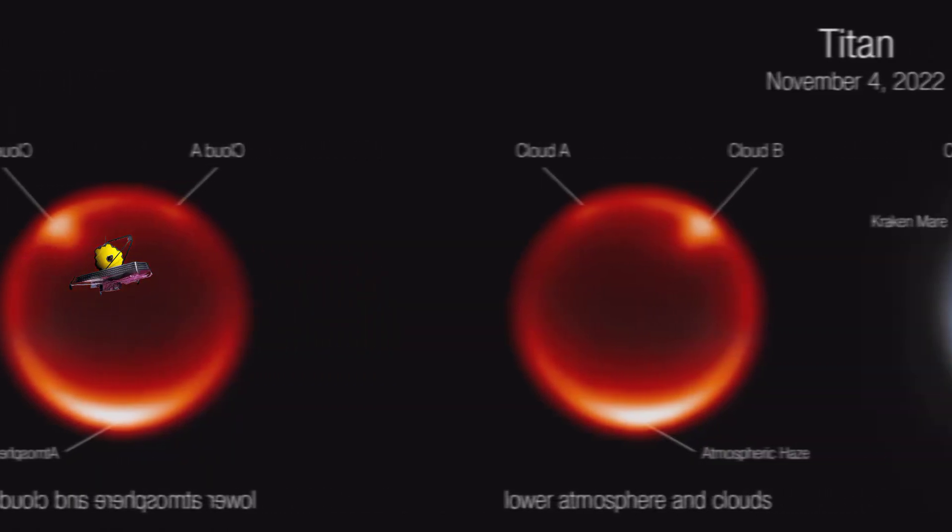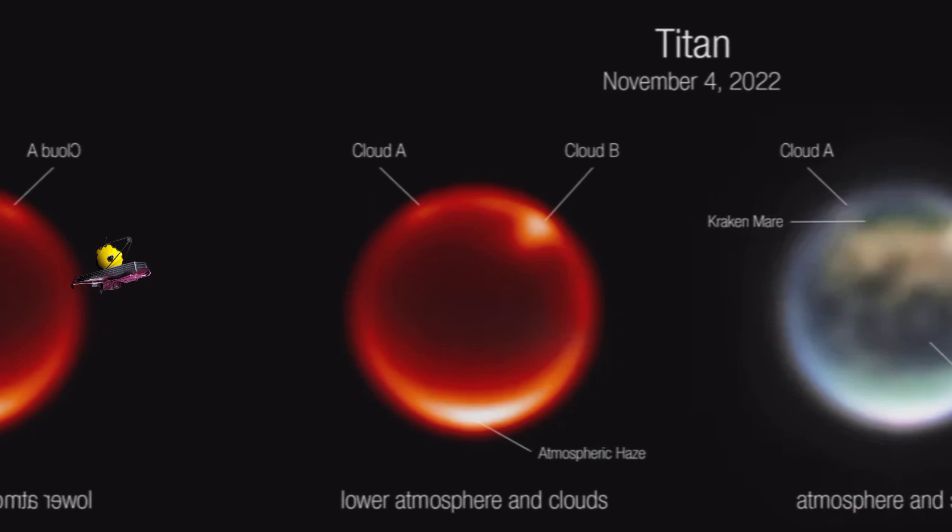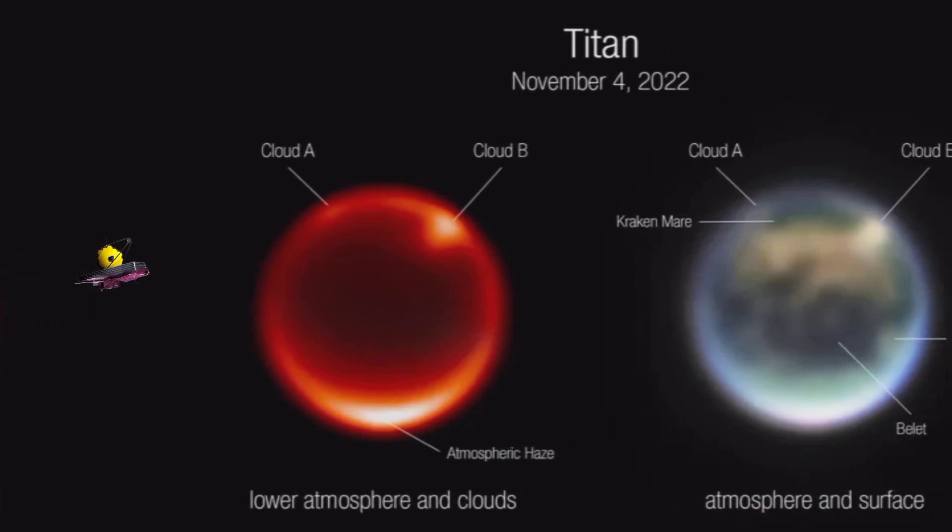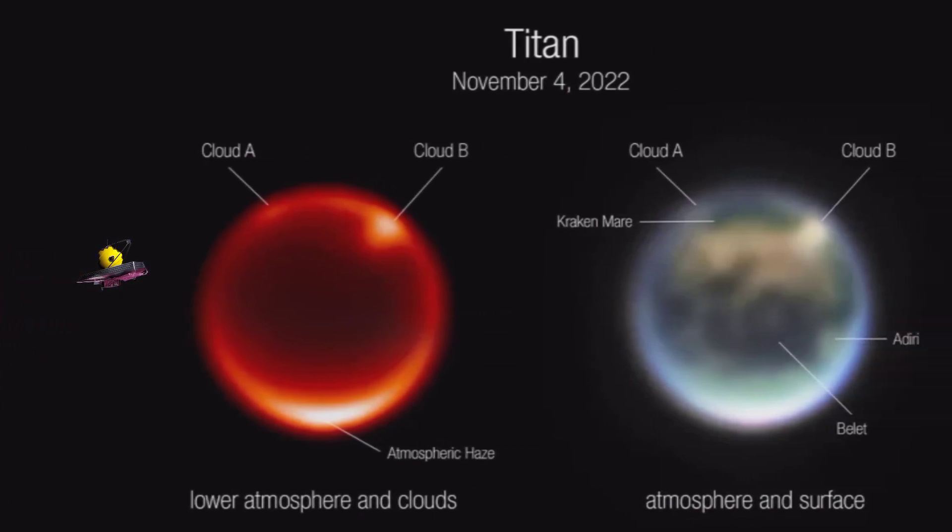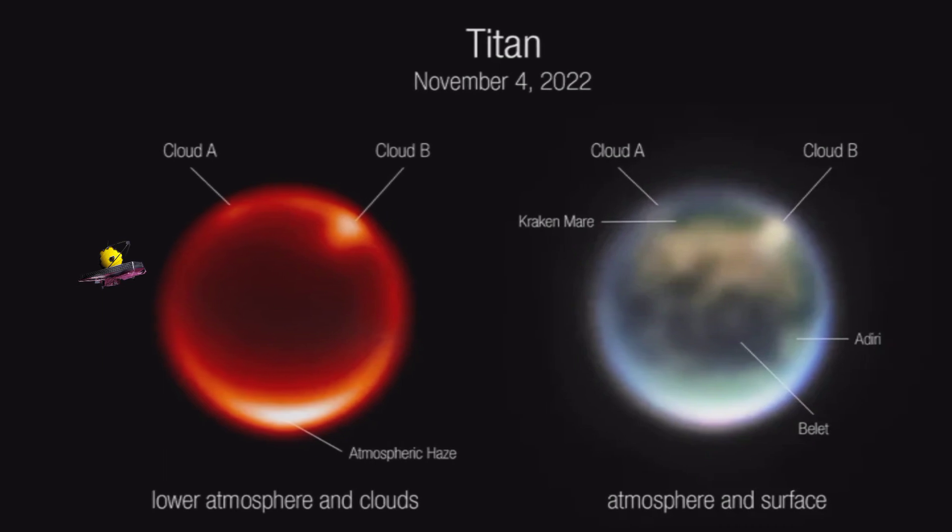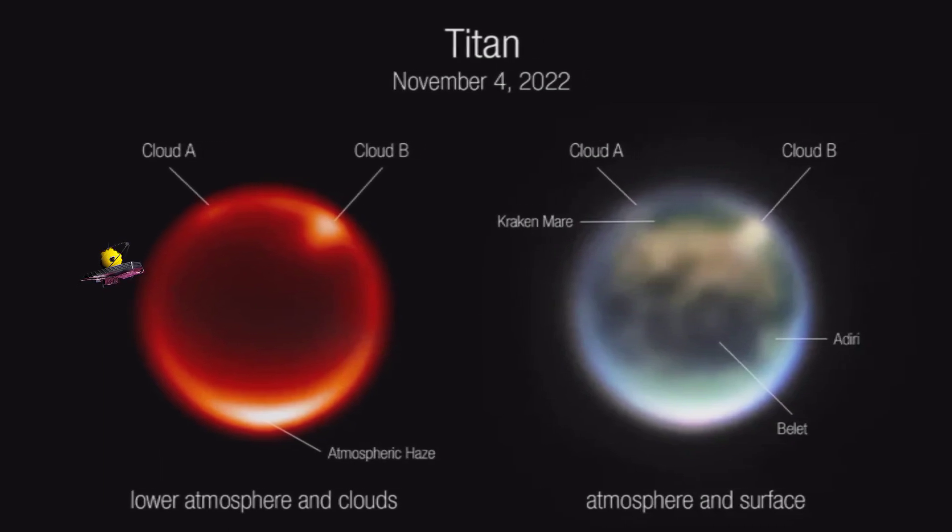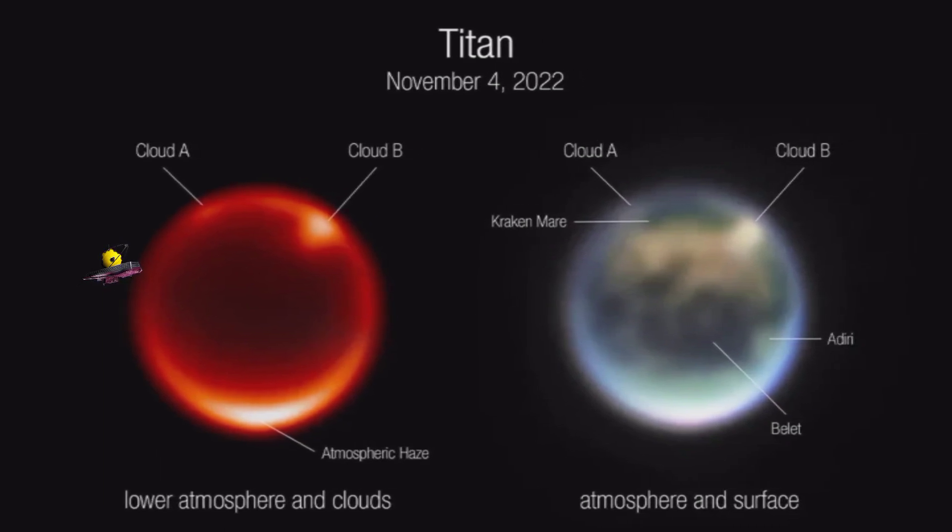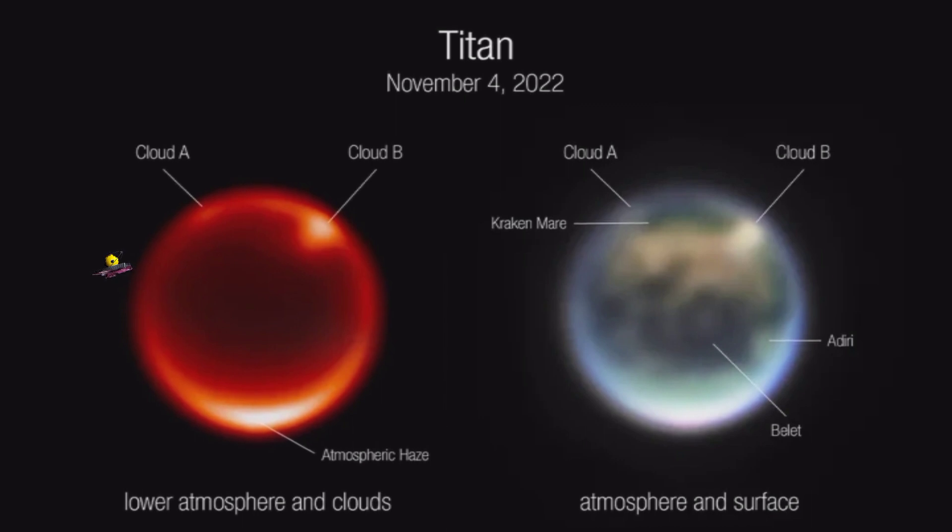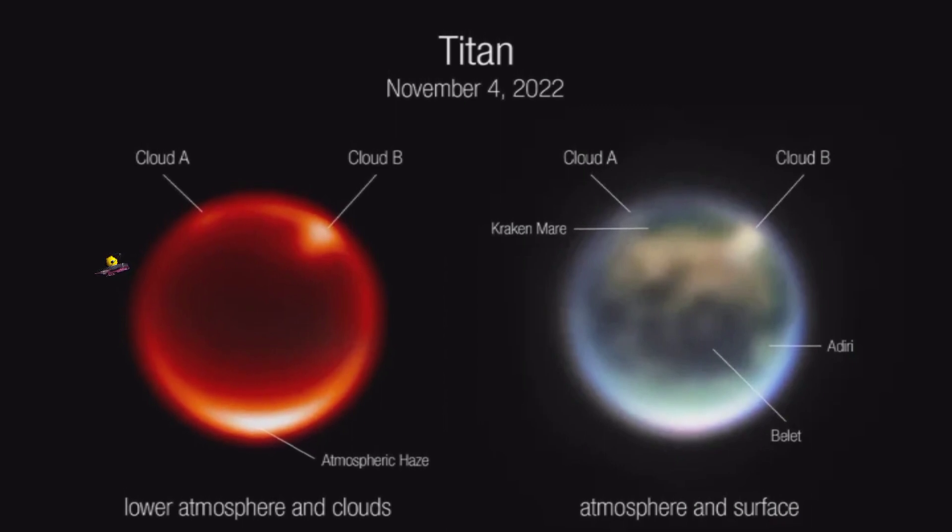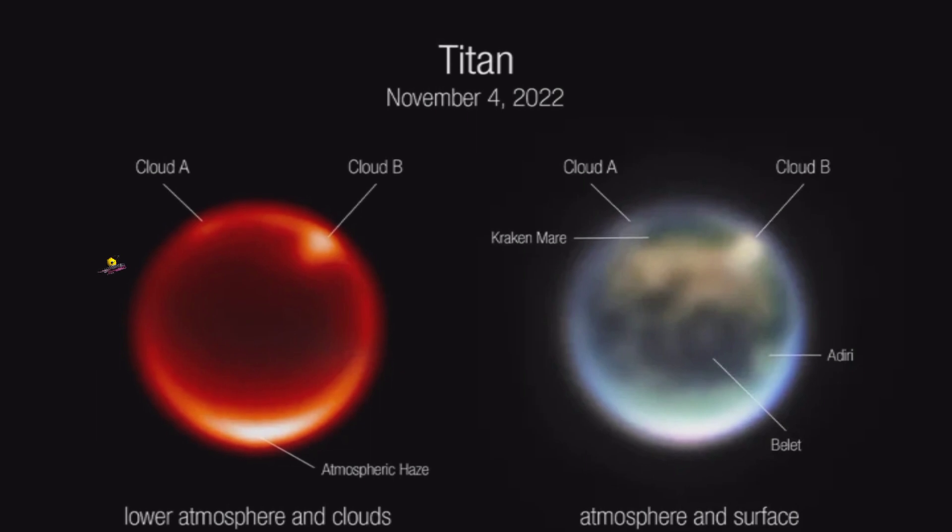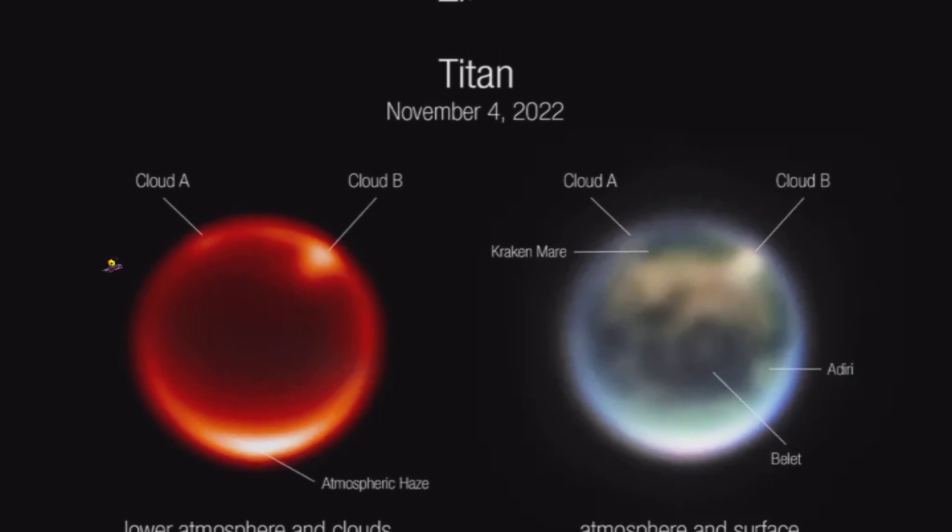Number 10. JWST once again thrilled the scientific community when it turned its attention to Titan, Saturn's largest moon. The observatory was able to capture Titan's dense methane clouds during an observation on November 4, 2022. One of the clouds, Cloud A, is located above the Kraken Sea, which is Titan's largest hydrocarbon sea. The Keck Observatory in Hawaii observed the scene a few days later to understand how clouds change over time.